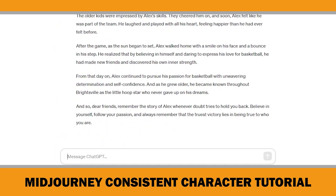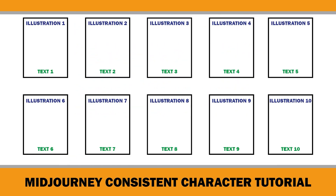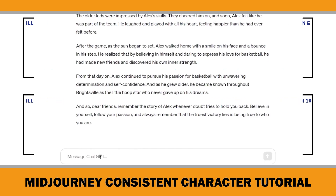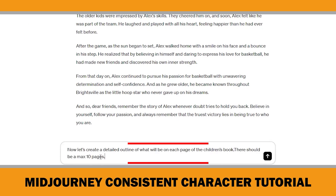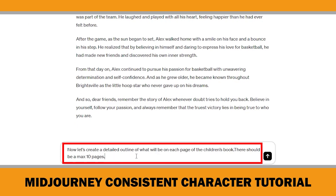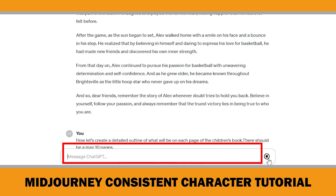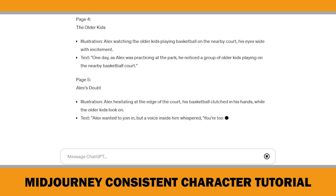After having the story, we need to create an outline. I like to work on a page-by-page basis — this way you know exactly what happens on each page, and it will also help you when you create the artwork later in Midjourney. Normally there should be a minimum of 24 pages, but I made it a maximum of 10 pages to keep the video concise. So I asked ChatGPT: now let's create a detailed outline of what will be on each page of the children's book, with a maximum of 10 pages. Then ChatGPT provided me with an outline of the story.